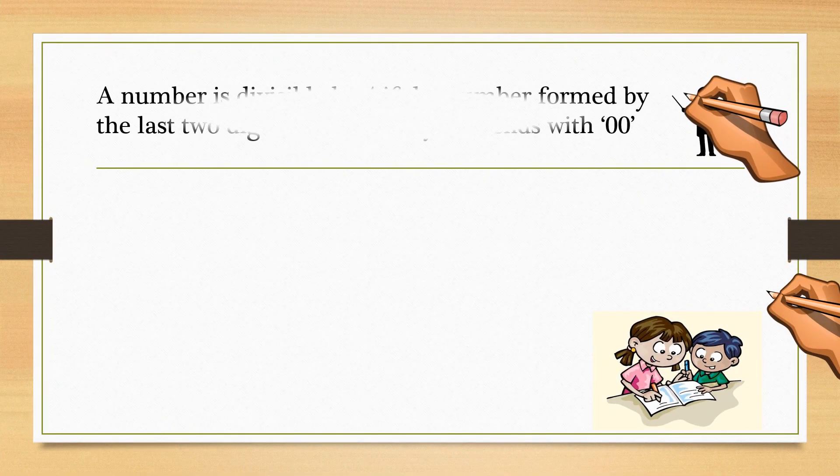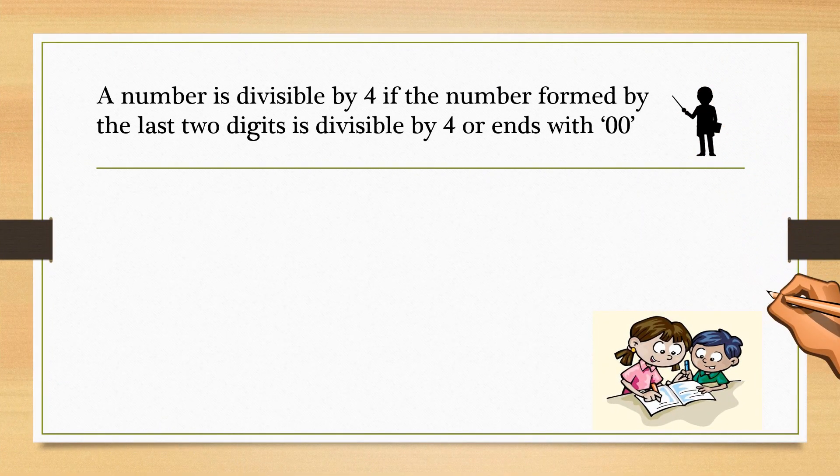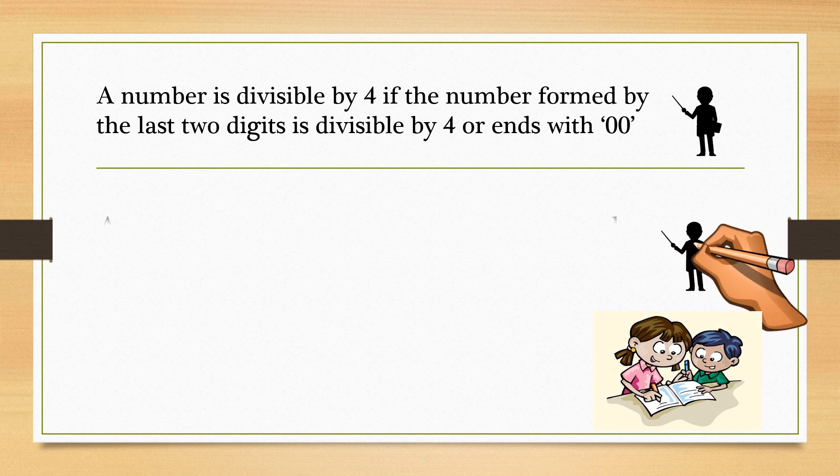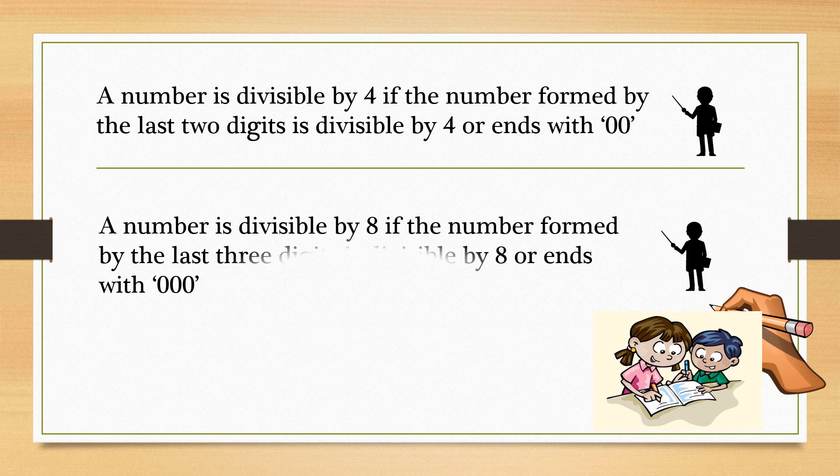If the last two digits are 00 or form a multiple of 4, then the number is divisible by 4. If the last three digits are 000 or form a multiple of 8, then the number is divisible by 8.